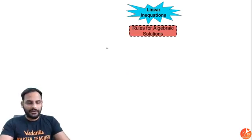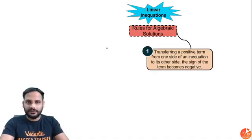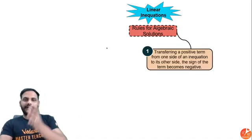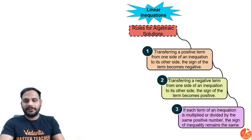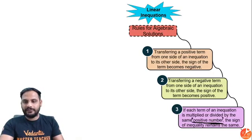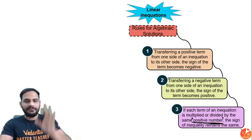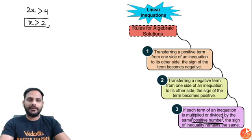Rules for algebraic solutions: most of the rules are exactly the same as you solve a linear equation. Positive shifted will become negative and vice versa. When we multiply or divide by a positive number, the sign will not change. For example, if 2x is greater than 4, then x is greater than 2. No need to change any sign.